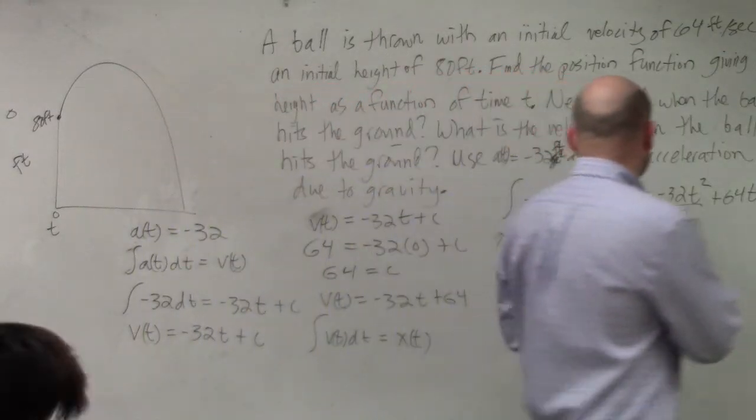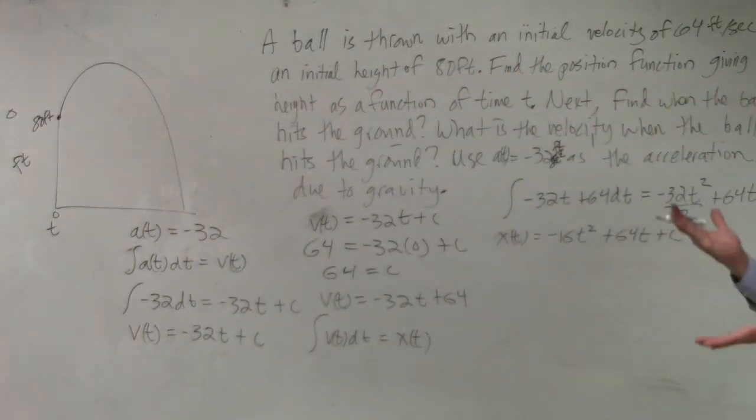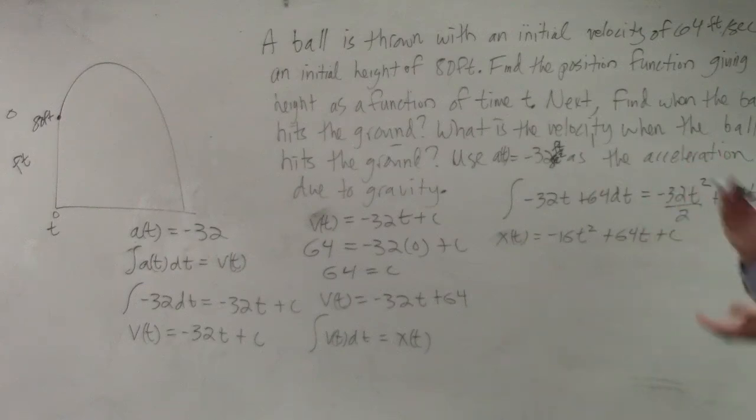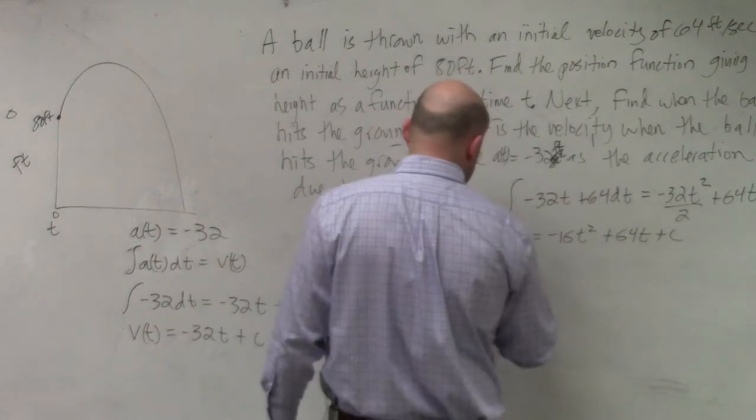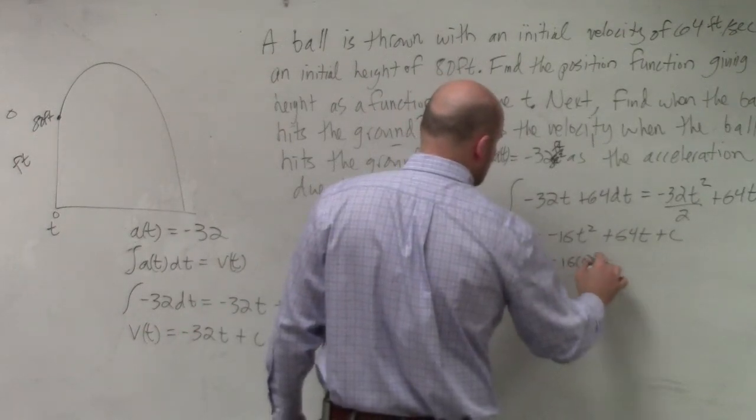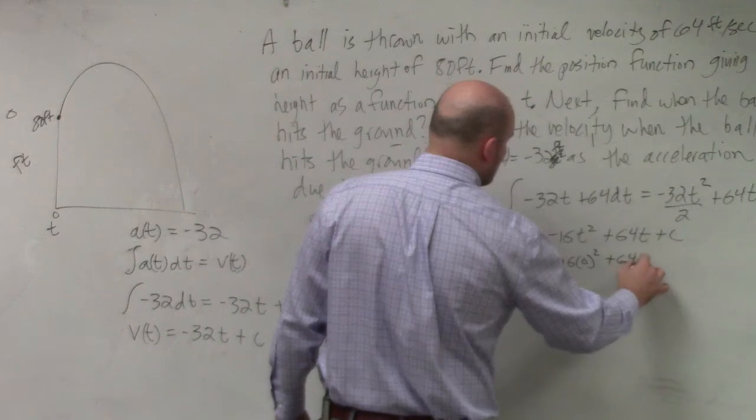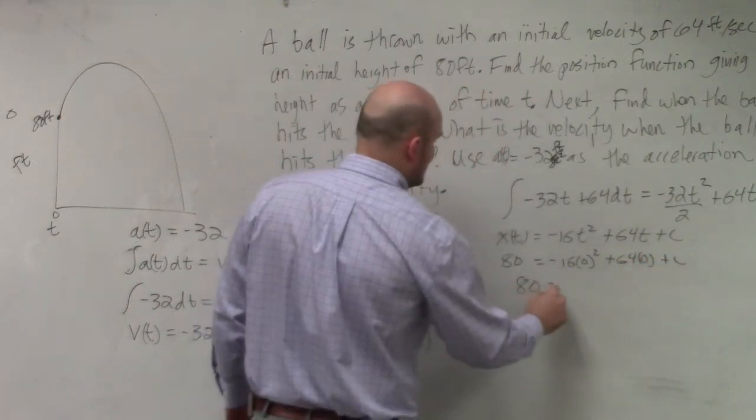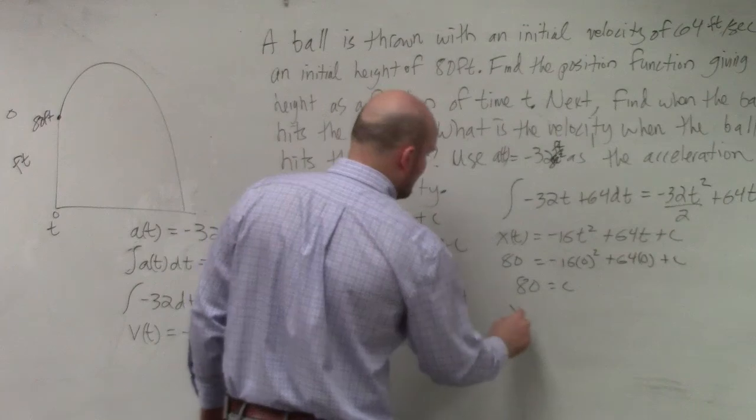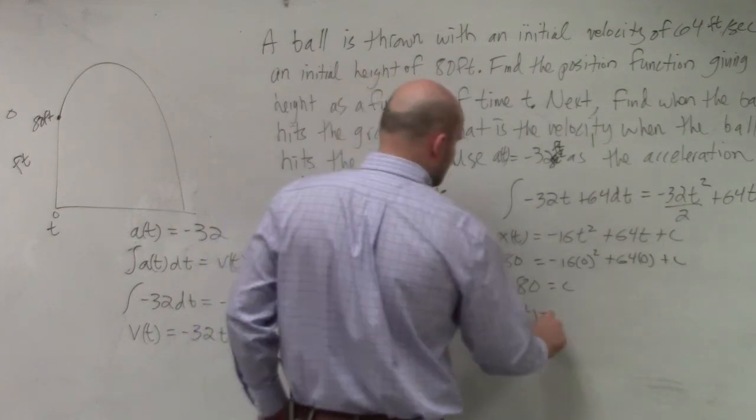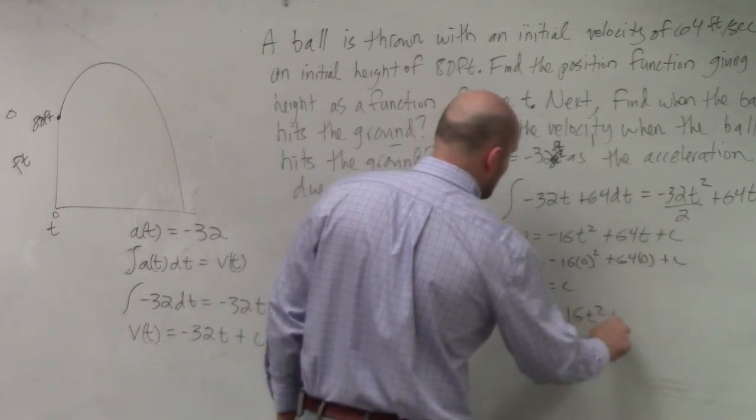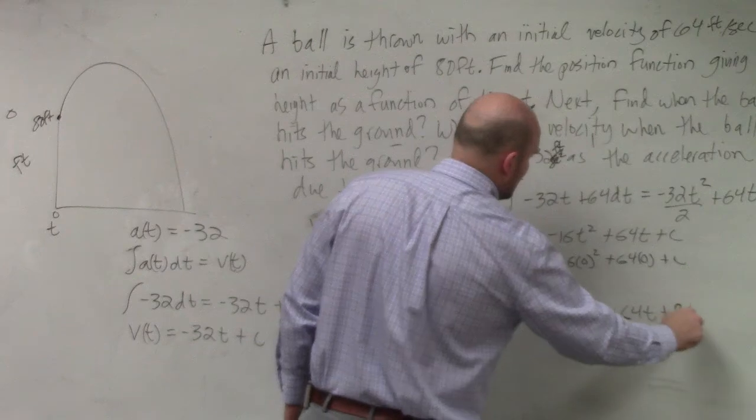Then again, now we need to go and look to it. Do I know a time interval? Do I know another time interval and position that can help me solve for c? Yes. What at, at t equals 0, what is my position? 80. So I have enough information now. So I could say 80 equals negative 16, 0 squared plus 64, 0 plus c. So 80 equals c. So therefore, my position function, which is question number one, is going to be negative 16 t squared plus 64 t plus 80.